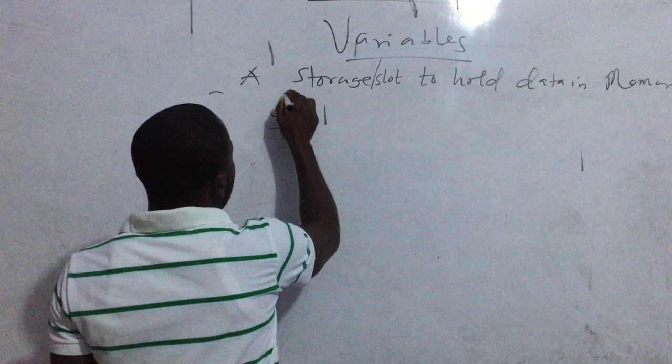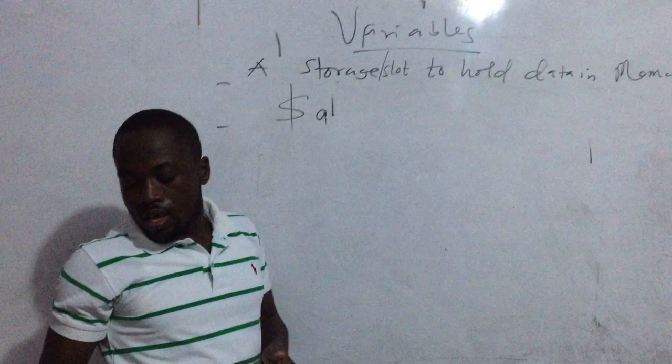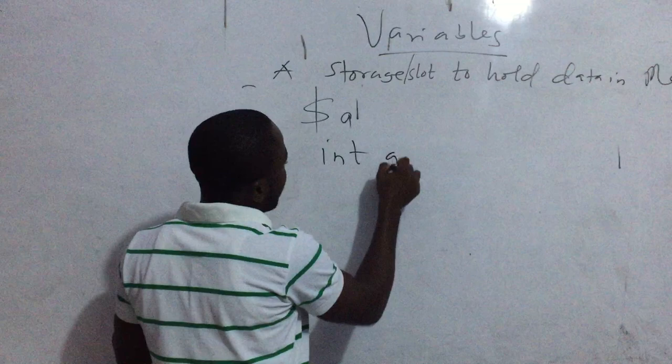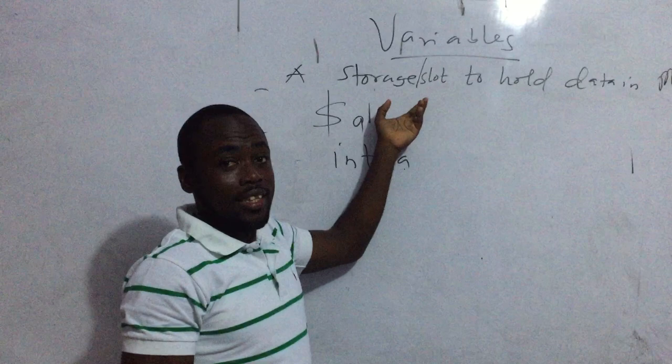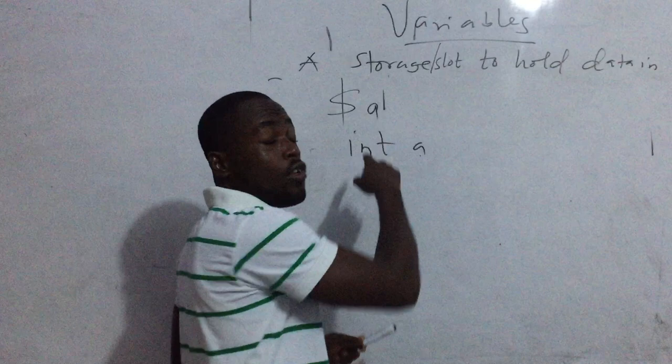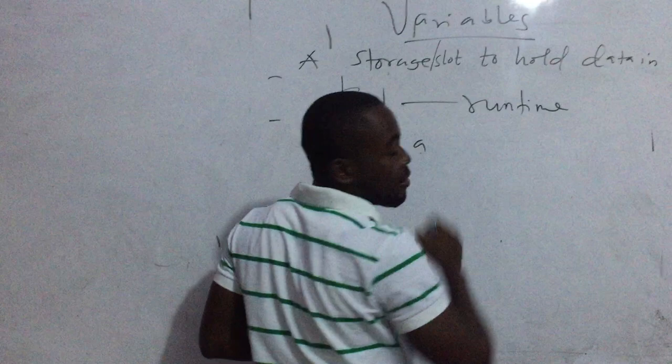Dollar $a means variable A. In Java and C++, to show that A is a variable, you have to give A a type like int A. But PHP is not a statically typed language — it is not compulsory to give it a type. We don't know the type of A until runtime, when the interpreter will determine it. With compiled languages, the type is known at compile time.